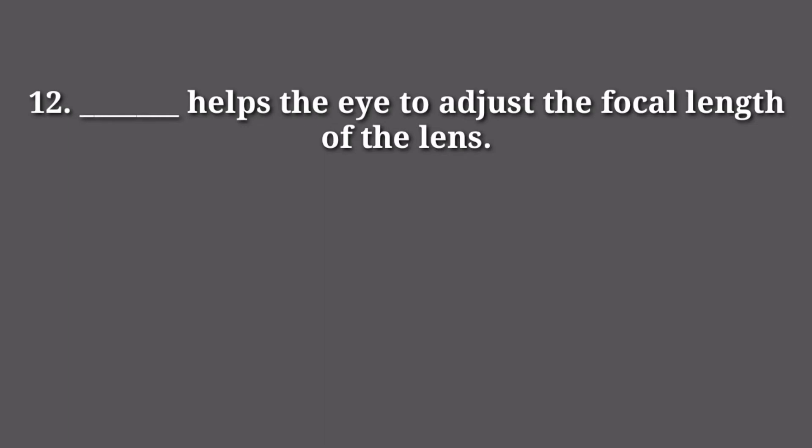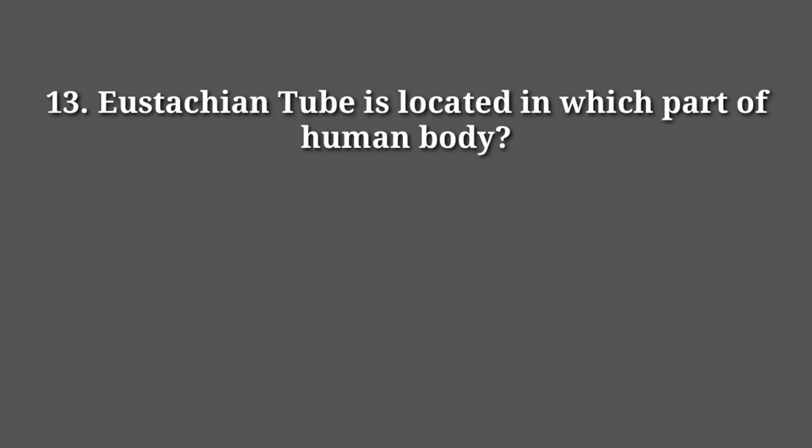What helps the eyes to adjust the focal length of the lens? The ciliary body helps to adjust the focal length of the lens. The Eustachian tube is located in the ear.